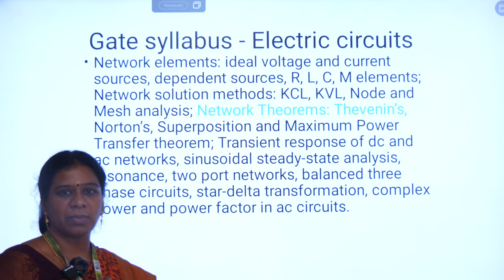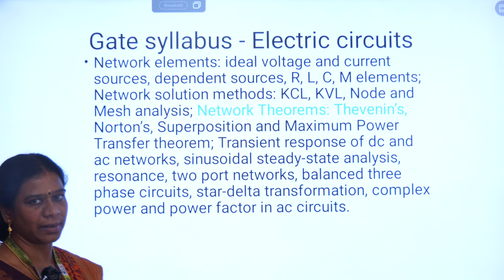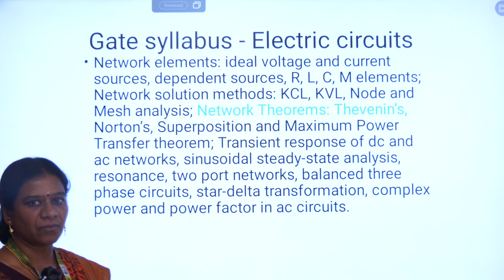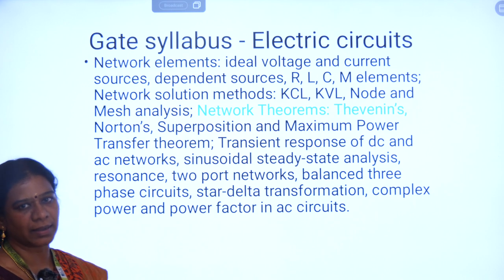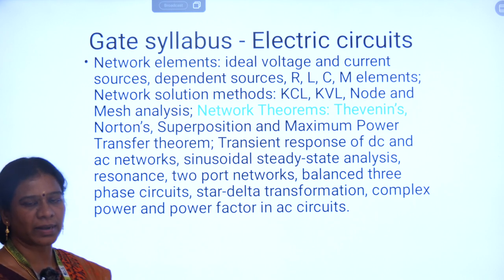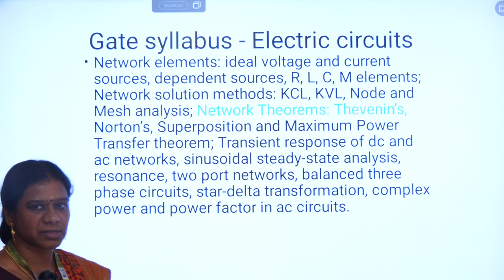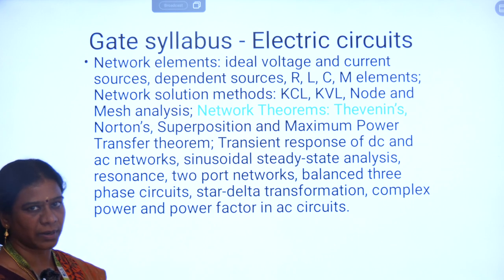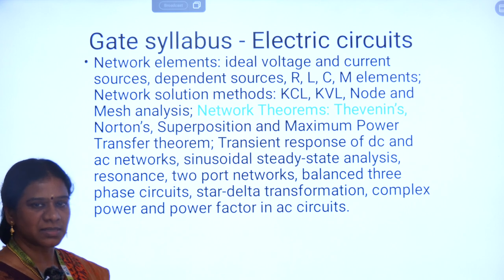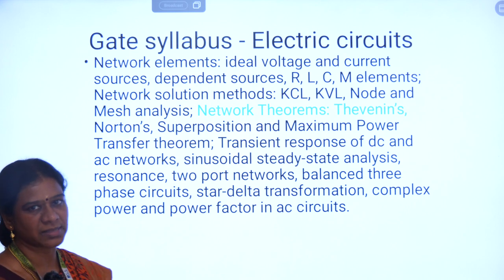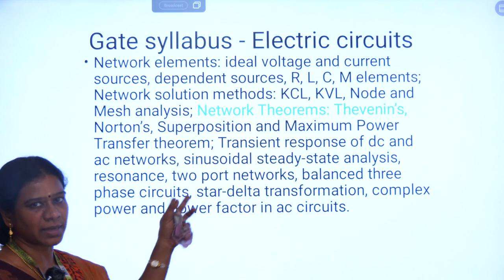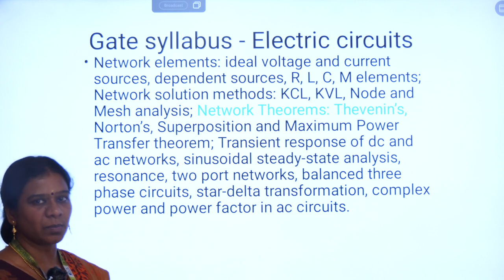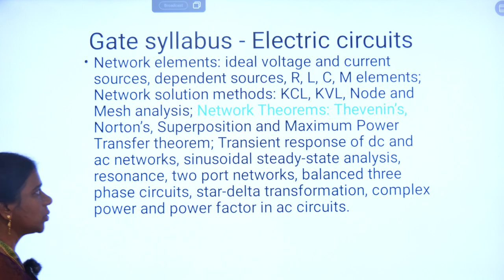These network theorems can be applied only for the linear bilateral network. A linear network is said to be a network in which we don't have any non-linear elements. For example, diode and transistor are non-linear elements. If those elements are not present, and the circuit consists of resistance, inductance, and capacitance, we can apply these theorems.